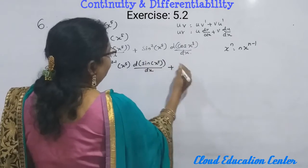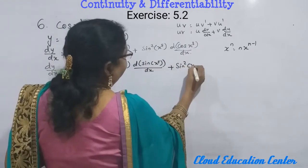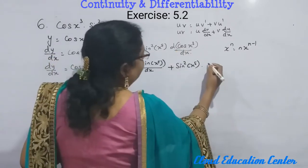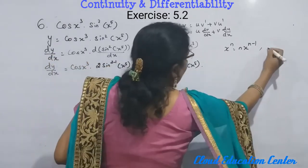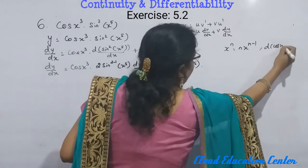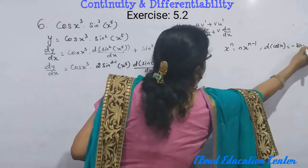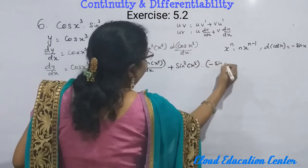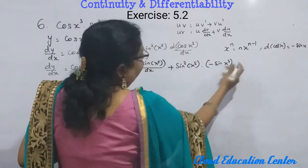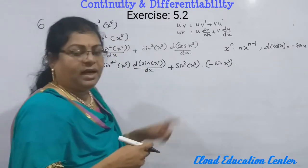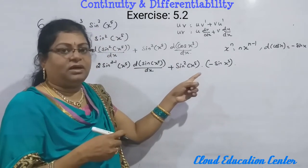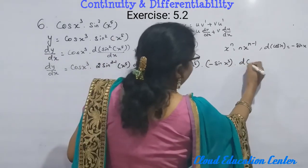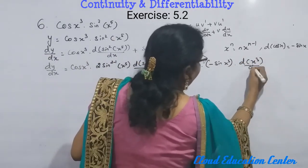Plus — we write sin²(x⁵) as it is, since we need not differentiate this term again. Now for cos(x³): differentiation of cos(x) is minus sin(x). Substituting here we get minus sin(x³). But we can't stop here because x³ is also a differentiable function, so we have to apply the chain rule — that means differentiation of x³ with respect to x.